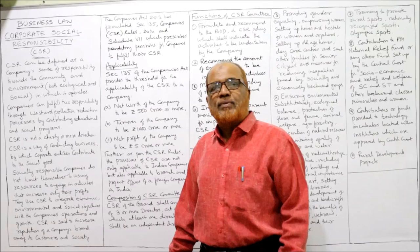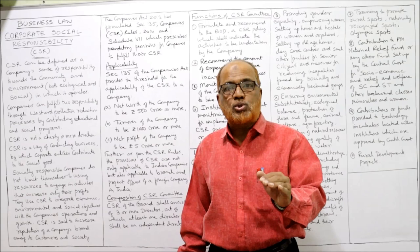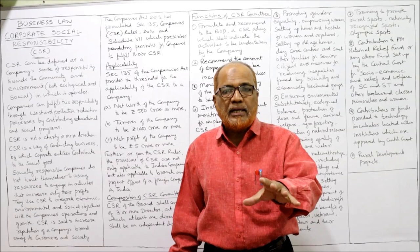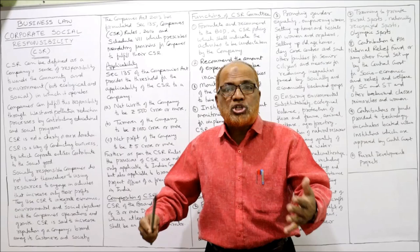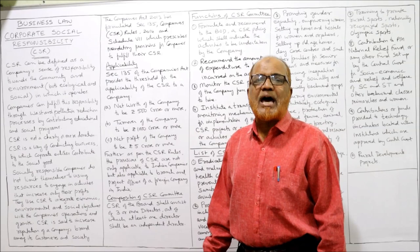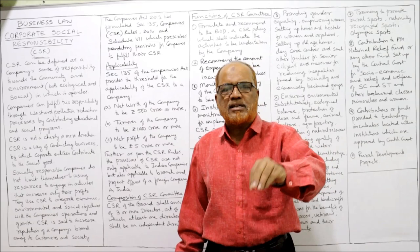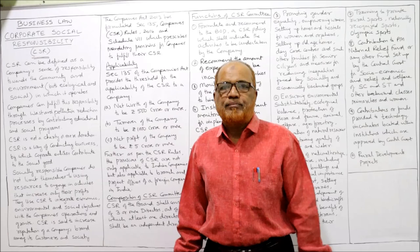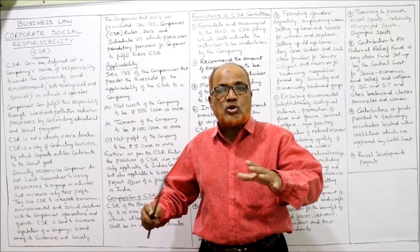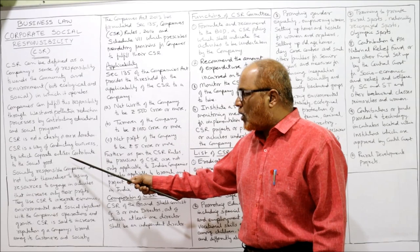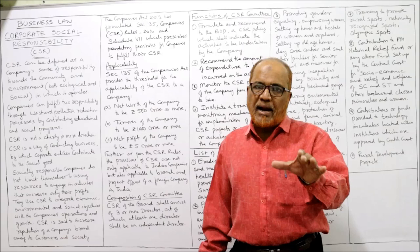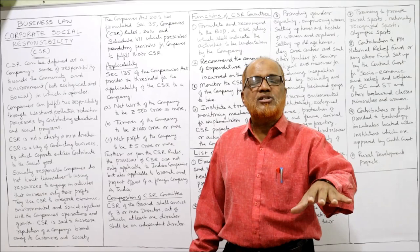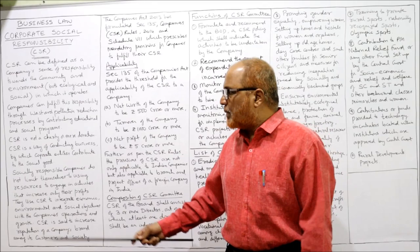A company can fulfill this responsibility through waste and pollution control — reducing wastages and reducing pollution. The company also has to promote educational and social facilities to the people. CSR is not just a charity or a donation. It is not simply that by giving a donation the company has been relieved from its social obligations. CSR is a project, it is a plan. It is a way of conducting business by which corporate entities contribute to social good, since companies are also part of society.